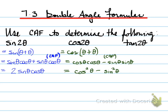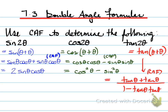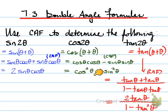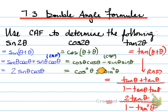And finally, for tan 2θ, you get tan of θ plus θ, and that equals, using the CALF rule, tan θ plus tan θ over 1 minus tan θ times tan θ, which gives you 2 tan θ over 1 minus tan² θ. This particular one can be converted to be just cosines using the Pythagorean identity, or it can be expressed in terms of sines using 1 minus sin² θ. So this formula has multiple different versions to give the final answer.